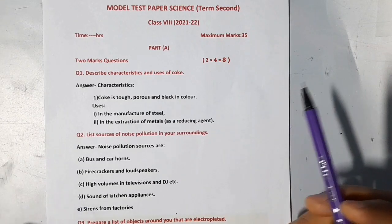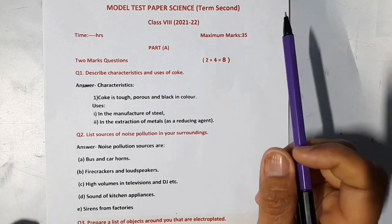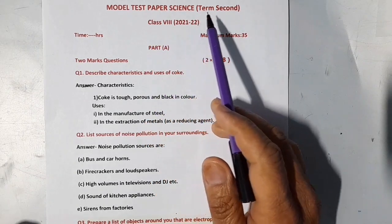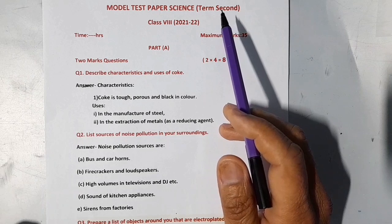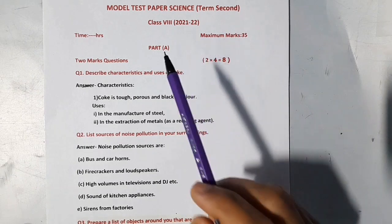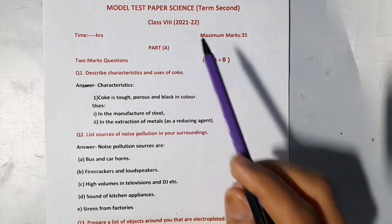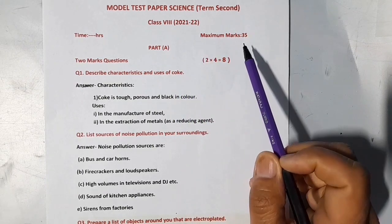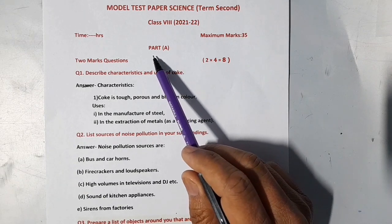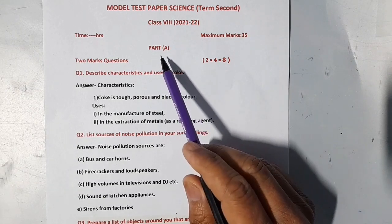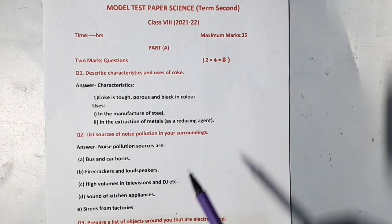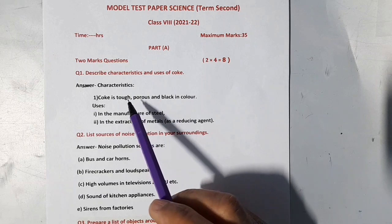Hello students, today we are going to solve model test paper of science for term 2 examination, which is issued by Punjab School Education Board. This question paper will consist of 35 marks. Now we are going to start Part A. Part A will consist of 4 questions of 2 marks each. Let's start our first question.